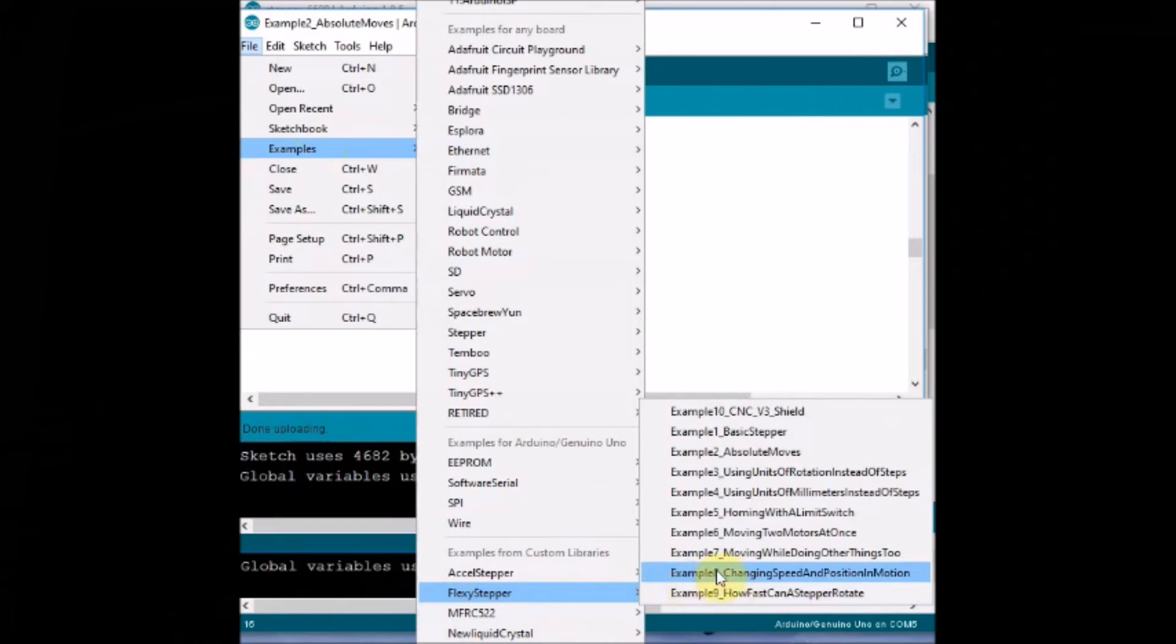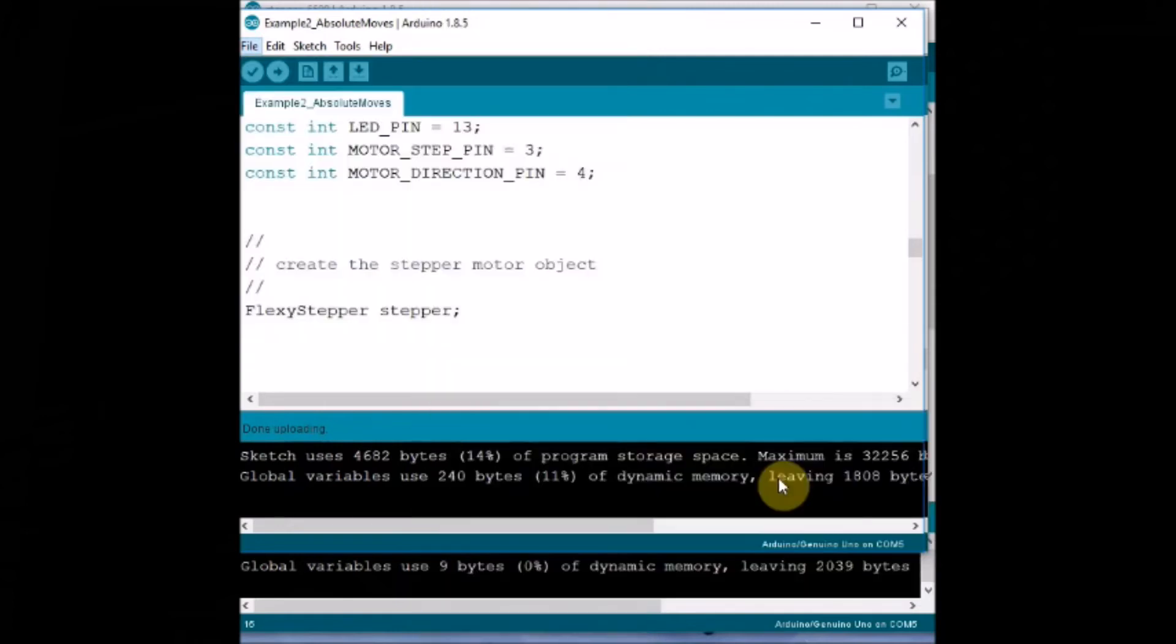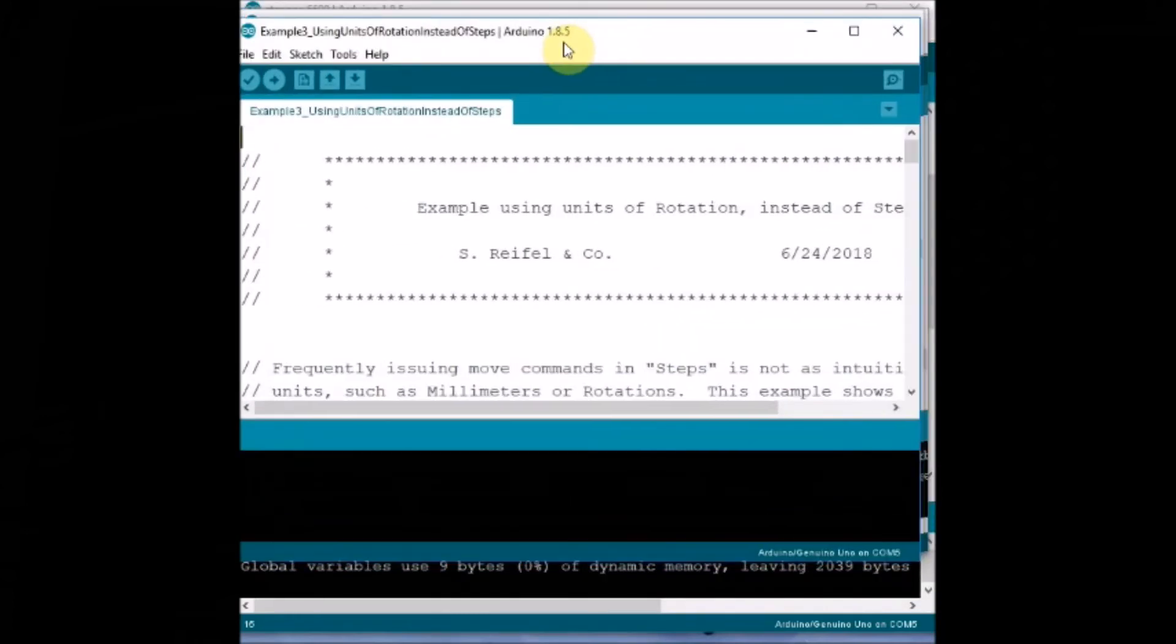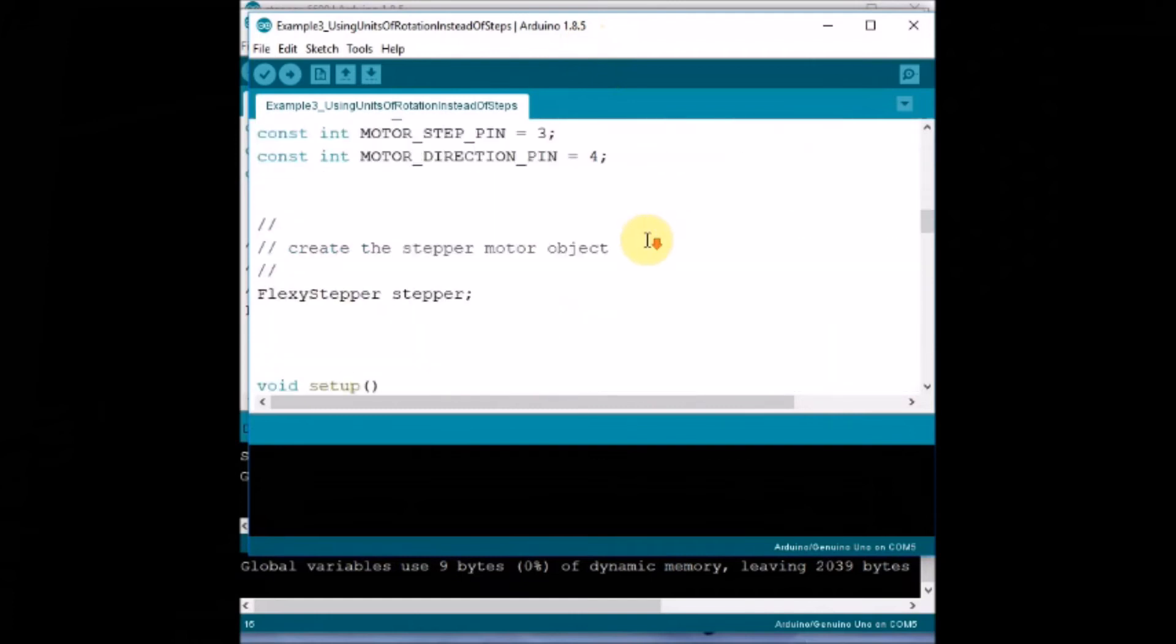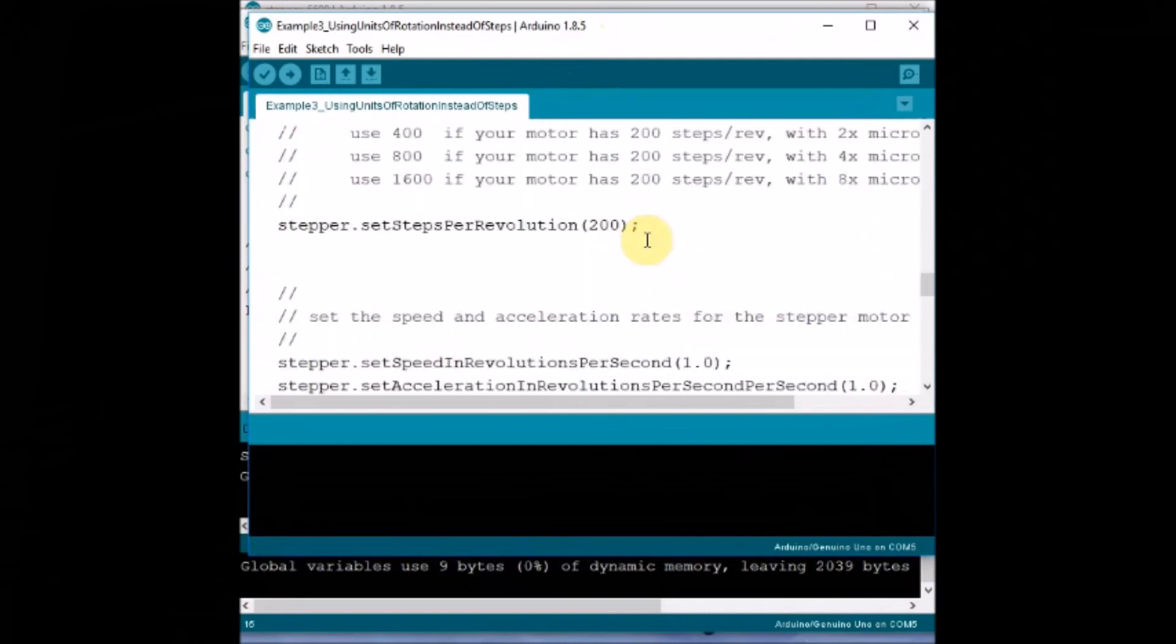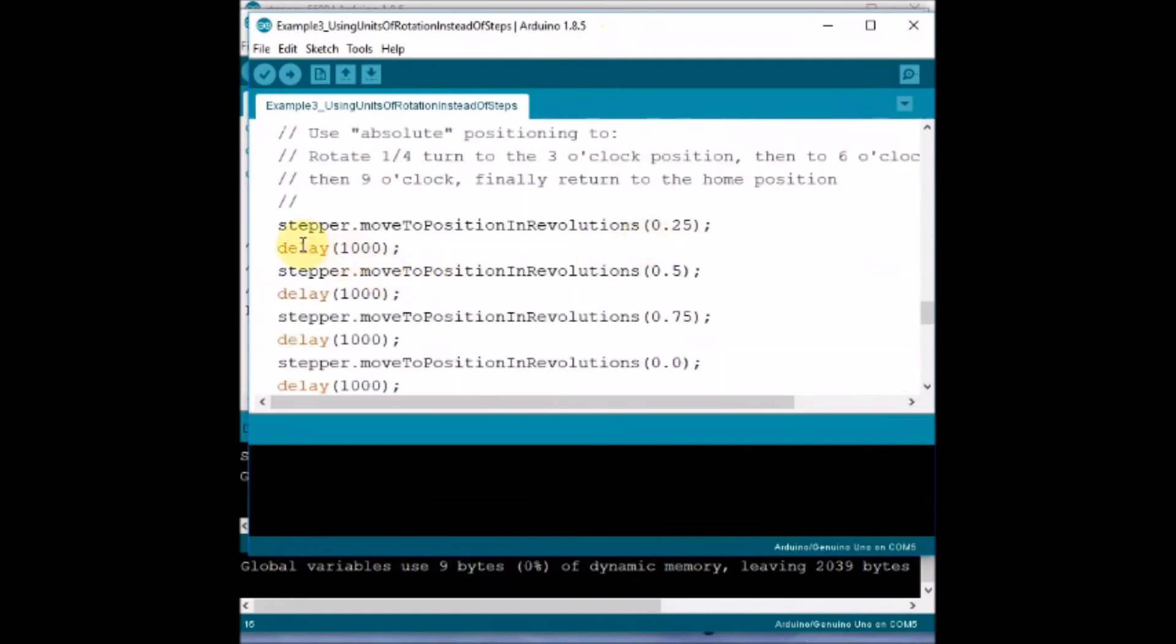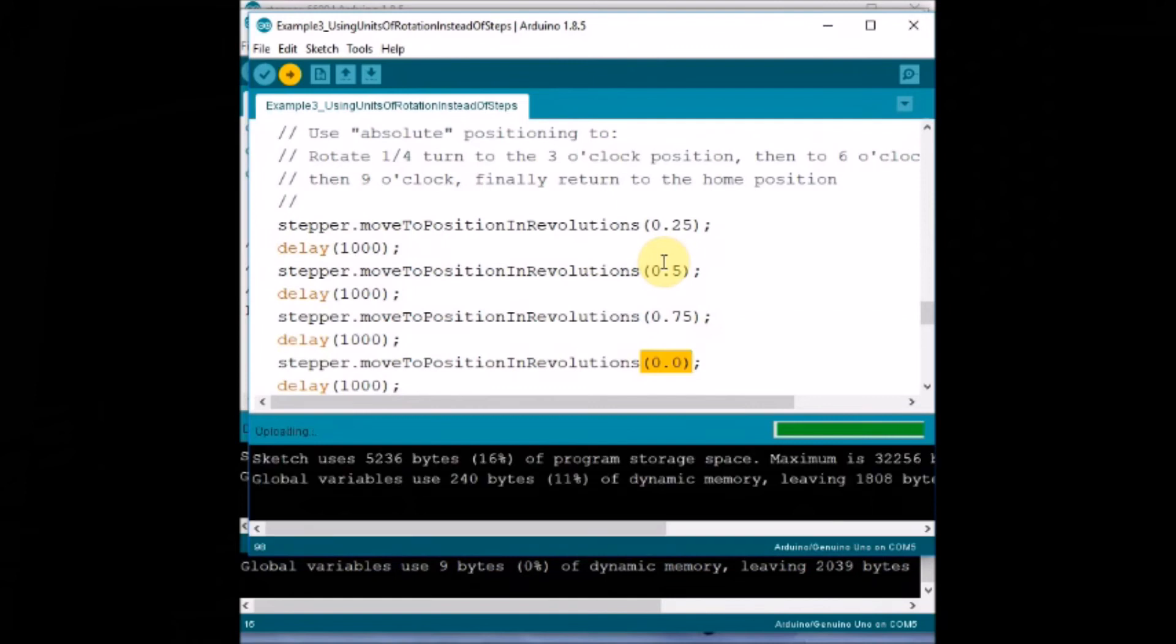Now let us see the third example. That is using units of rotation instead of steps. Instead of steps 200 like that, we can give units of rotation 0.25, 0.5, 0.75 like that. Here initially we set the stepper, set to steps, and then set speed and acceleration. And then move to position in revolutions is used to move to 0.25, 0.5, 0.75 and then back to home.